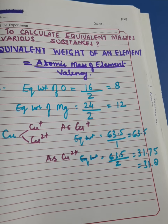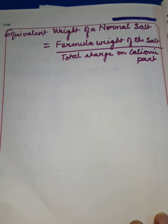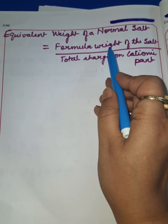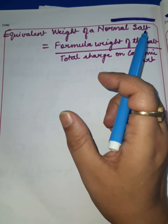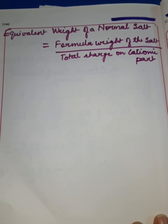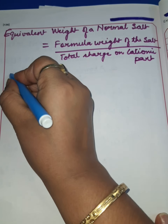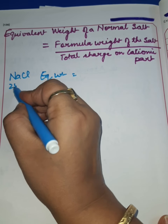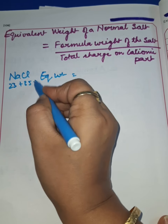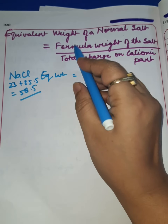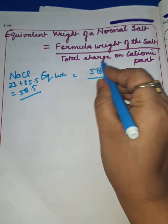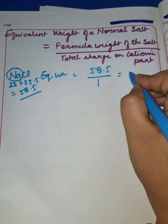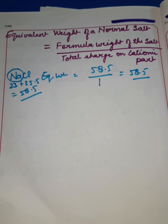Now we are going to see how to calculate equivalent weight of a normal salt. Equivalent weight of a normal salt equals formula weight of the salt divided by total charge on the cationic part. For example, for NaCl: formula weight is sodium (23) plus chlorine (35.5), which equals 58.5. Divided by total charge on the cationic part — sodium has a charge of 1 — so 58.5 divided by 1 equals 58.5, which is the equivalent weight of sodium chloride.